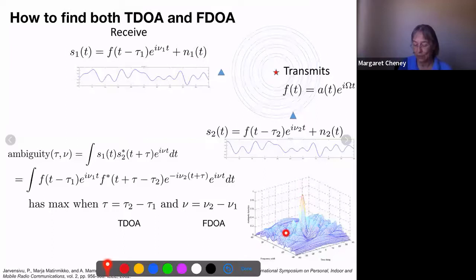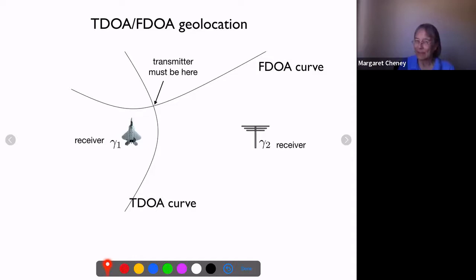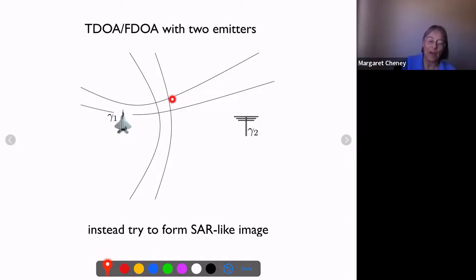Once you have the TDOA and FDOA from a pair of sensors, the transmitter must be at the location where those two curves intersect. The real case is more complicated: with two emitters you have two TDOAs and two FDOAs that intersect in four points, leading to a combinatorial explosion of possible locations. This motivates forming a SAR-like image, as Jim Gibbon mentioned.